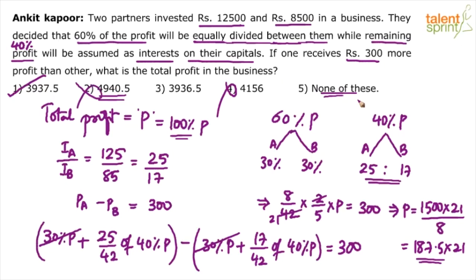180 into 20 is 3600. 180 into 1 is 180. So 3600 plus 180 is 3780 plus 7.5 into 21. 7.5 into 20 is 150. So 3780 plus 150 is 3930 plus 7.5 into 21, which is 7.5. So 3930 plus 7.5 equals 3937.5.